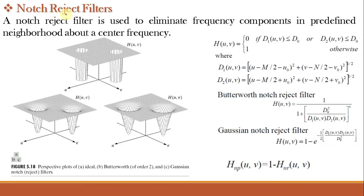A notch filter is a filter that attenuates signals within a very narrow band of frequencies. A notch reject filter eliminates frequency components in predefined neighborhoods about a center frequency. It is a special form of a band pass or band reject filter — instead of removing an entire range of frequencies, it removes only selective frequency components. It is useful for removing periodic signals of well-defined, known frequency, such as interference patterns caused by electrical disturbances.